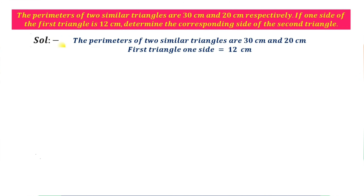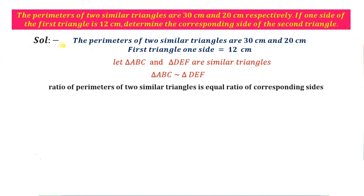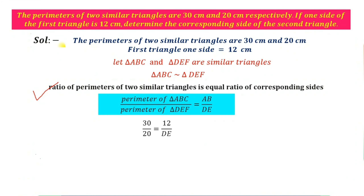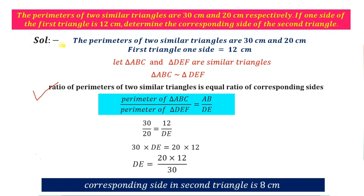The perimeters of two similar triangles are 30 cm and 20 cm. First triangle's one side is 12 cm. Let ABC and DEF be similar triangles. The ratio of perimeters of two similar triangles is equal to ratio of corresponding sides. Substituting 30 by 20 equals 12 by DE — cancel or cross multiply: 3 into DE, 2 into 12. The answer is 8 cm.